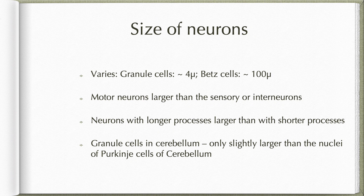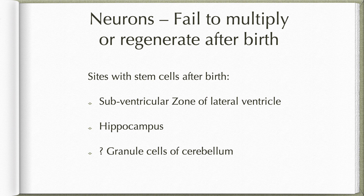The size of neurons varies from 4 microns in case of granule cells to 100 microns in case of Betz cells. Generally, motor neurons tend to be larger than sensory neurons or interneurons, and neurons with longer processes are larger than those with shorter processes. Like granule cells in the cerebellum, their size is just about the same as the nucleus of the adjacent Purkinje cells. Neurons, being specialized cells, fail to multiply after birth, but certain sites in the brain have stem cells even after birth — the subventricular zone of the lateral ventricle, the hippocampus, and possibly the granule cell zone of the cerebellum.